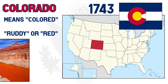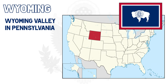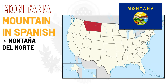Wyoming gets its name from the Wyoming Valley in Pennsylvania, which itself got its name from a Munsee word — another native language — that literally meant 'big river flat.' Montana is again super straightforward: it means 'mountain' in Spanish. Montaña del Norte was the name given by early Spanish explorers to the entire mountainous region of western North America.